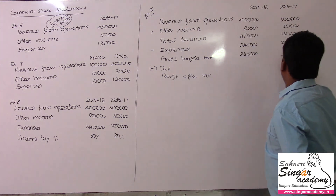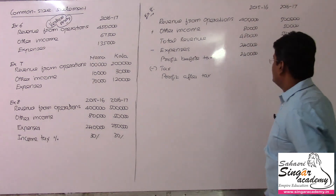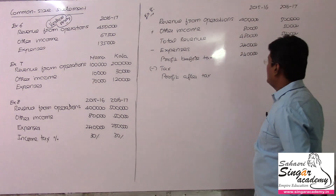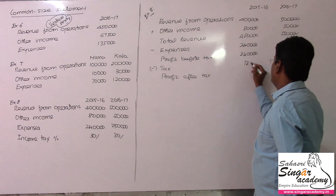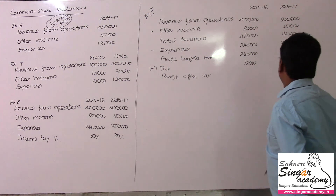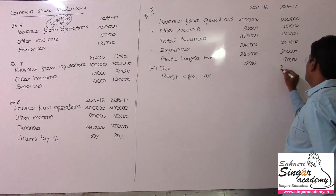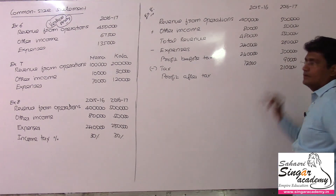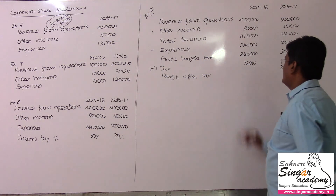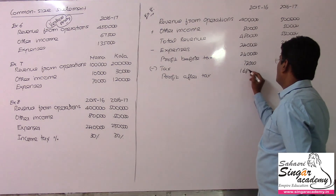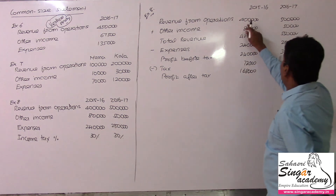Tax rate is 30 percent. Tax on 2 lakhs 40,000 is 72,000 rupees, and tax on 3 lakhs is 90,000. So profit after tax becomes 2 lakhs 40,000 minus 72,000 equals 1 lakh 68,000.